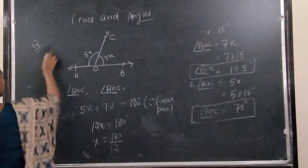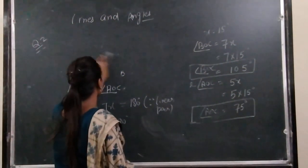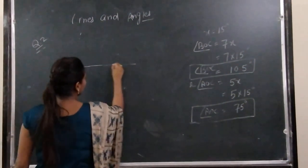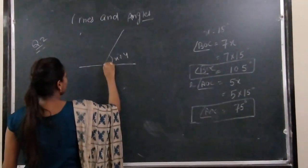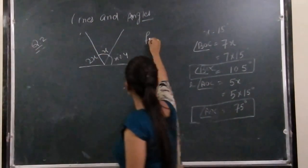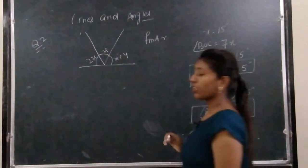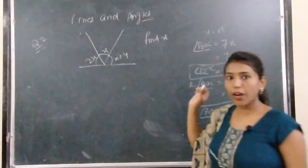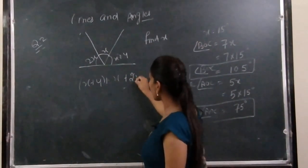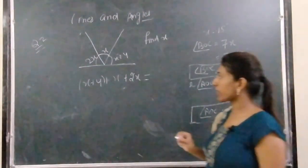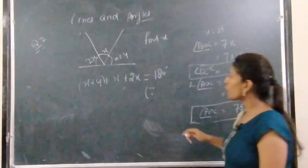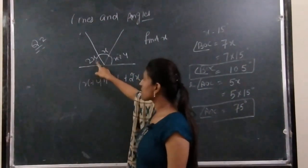Next, second question — again, it is for your practice, not in your NCERT textbook. Here, find X. How will we solve this? X plus 4, plus X, plus 2X is equal to what? X plus 4, X, and 2X equals 180 degrees. We will not write linear pair as the reason here because there are not two angles — there are three angles. So we will write the reason as straight line angle.